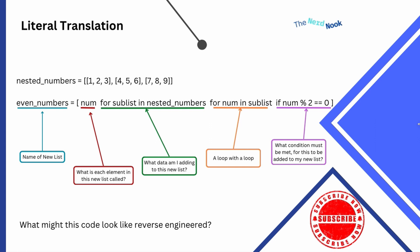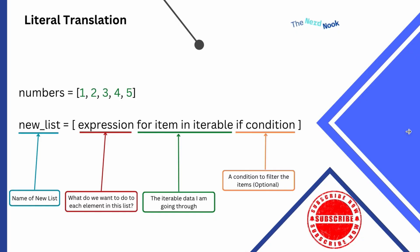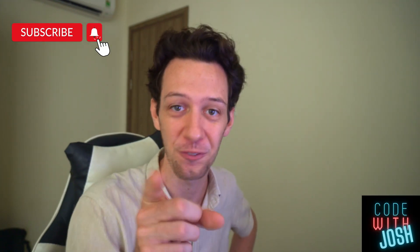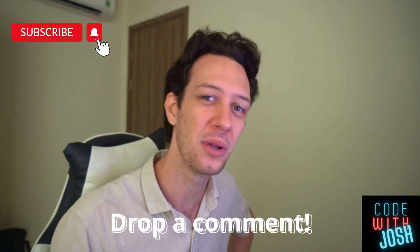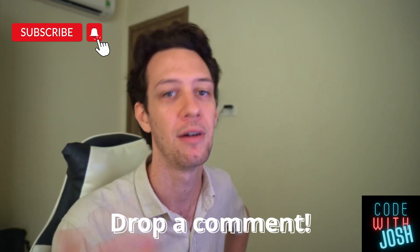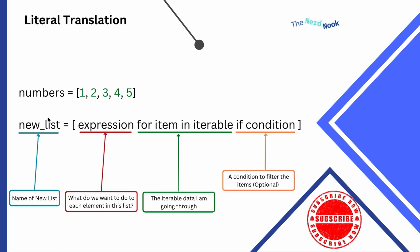What might this code look like if we reverse engineer it? Let's take a look at what it is — this is that list comprehension. If I literally translate that line of code — and I love to do that, I break things down for you guys — comment below and let me know what you think of how I break this stuff down.